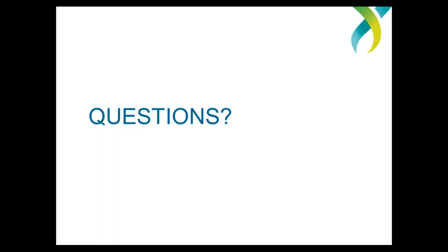A question about the address for service: what do we actually send to that address? The most important correspondence we send are reminders that the Annual Information Statement is coming due, and then reminders if it's overdue. If an organisation doesn't receive those, they might forget to submit, and there is a risk of a penalty if it's late — or, as mentioned, if you don't submit for two years, registration can be revoked. It's essential that correspondence goes to an email address where someone will receive it.